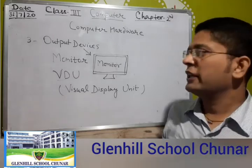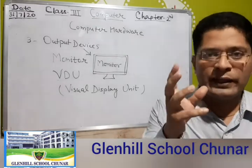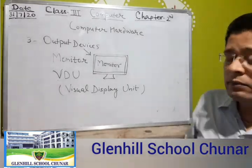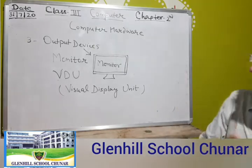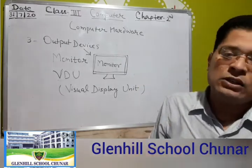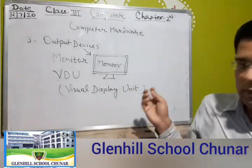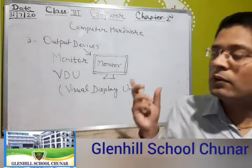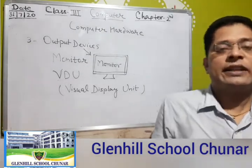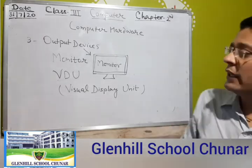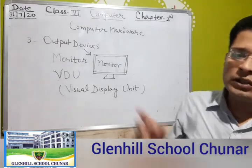The output given by a monitor is called a soft copy. You know about hard copy — that is from the printer, on paper. The output given by the monitor is called a soft copy. The results that come on the monitor, we call them soft copy. And we can watch movies and play games on the monitor. It looks like a television.